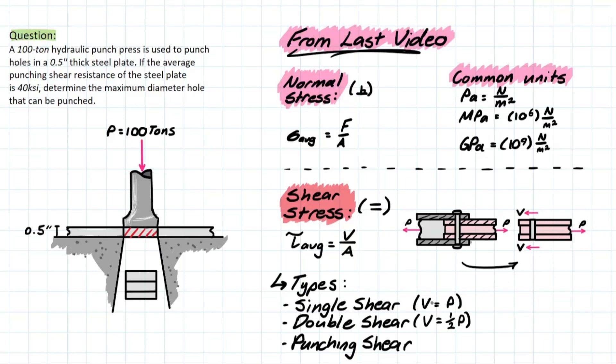And then single shear, obviously, would be where one area is considered rather than two. And then there's another type of shear stress, which is known as punching shear, which is what this problem is going to be dealing with today. So let's clean up this area here and actually get into the problem.